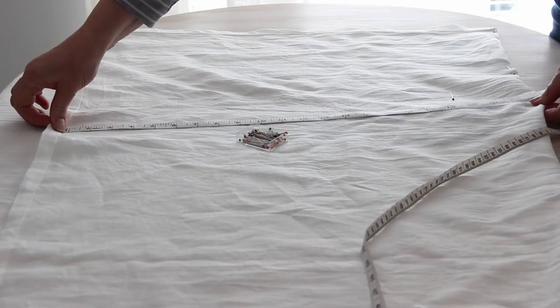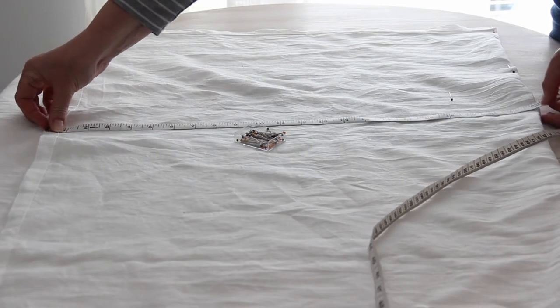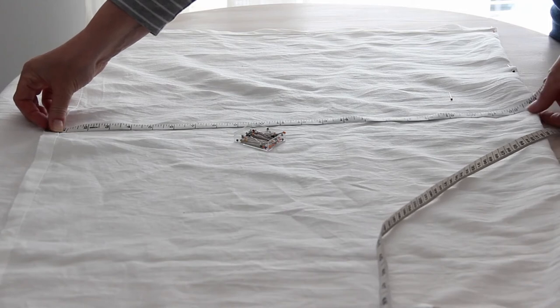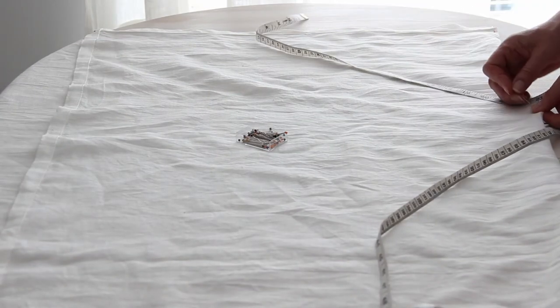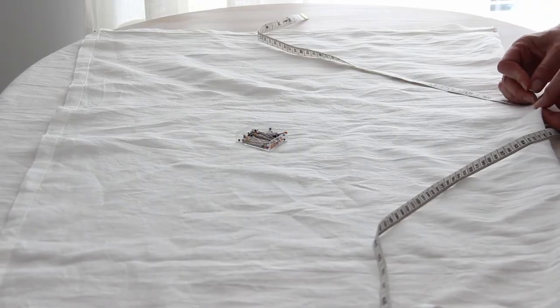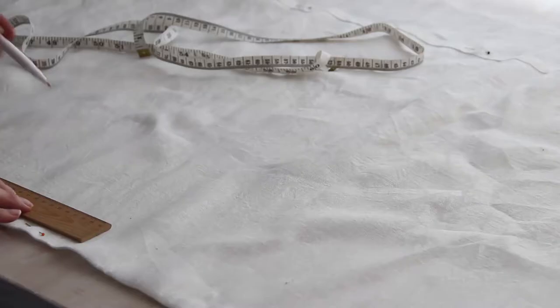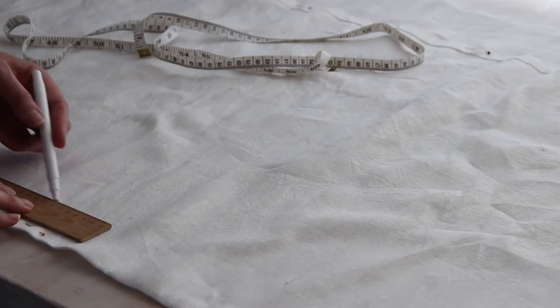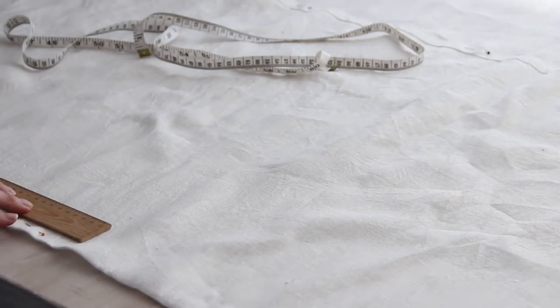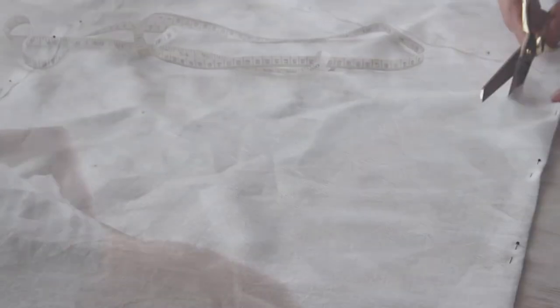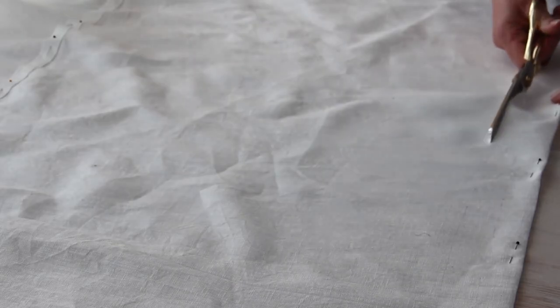Once you're completely certain that the curtains are the right length then you can take them down from the curtain pole and we're going to make a mark for our seam allowance next. Measure up from the bottom of your curtain two inches and mark again with your tailor's chalk or your pen and that's going to be your cut line.